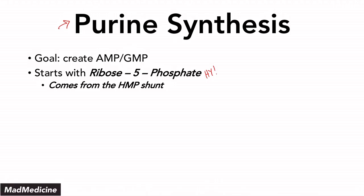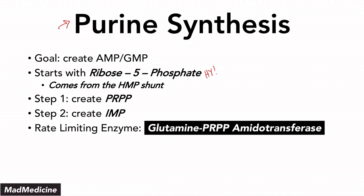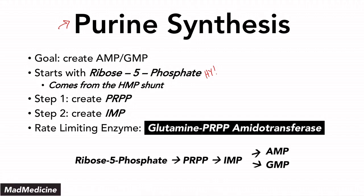From there, you have two main steps you need to remember. The first step is creating a molecule called PRPP, and the second step is creating a molecule called IMP. The rate-limiting enzyme is going to be glutamine PRPP amidotransferase. This is what the pathway looks like, and you need to remember that glutamine PRPP amidotransferase plays a role right here in the process of converting PRPP to IMP, and IMP can then become AMP and GMP, and that's going to go to forming RNA and eventually DNA.